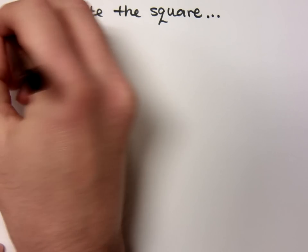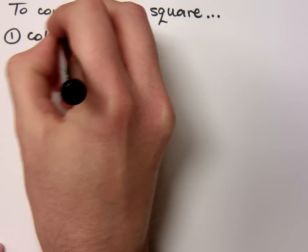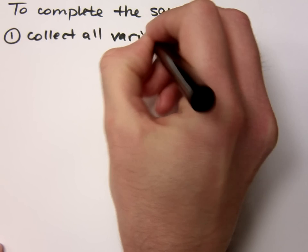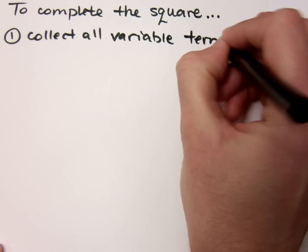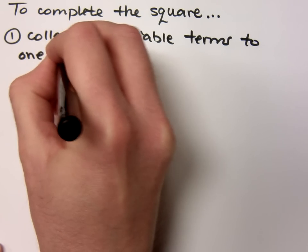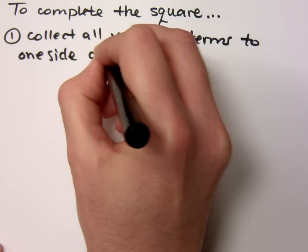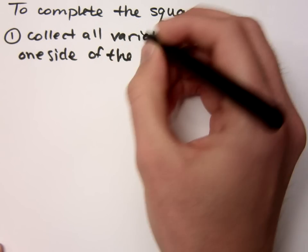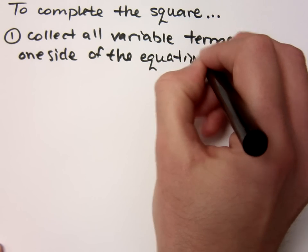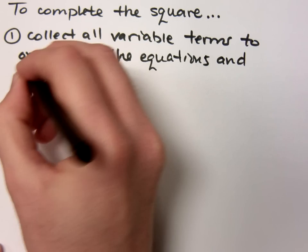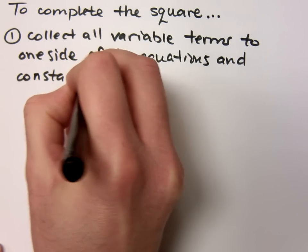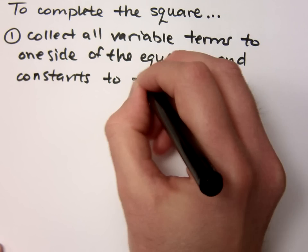So the first thing that you're going to do is that you need to collect all variable terms to one side of the equation and constants to the other side.